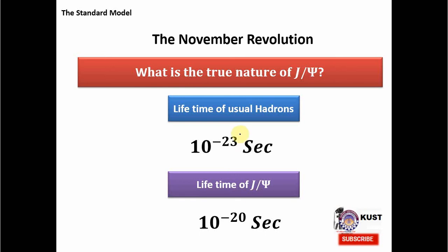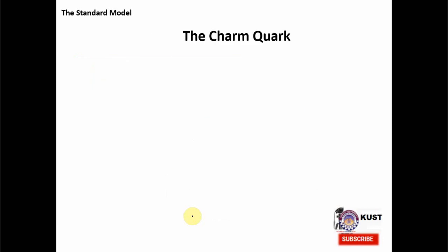Physicists at that time said exactly this — that the difference between the lifetimes of usual hadrons and J/Psi is not because of some anomaly but because of new physics. In the search for this new physics, physicists found that there is actually another quark called the charm quark. This charm quark is so heavy that it makes up a charm and anti-charm pair, forming the new meson J/Psi.